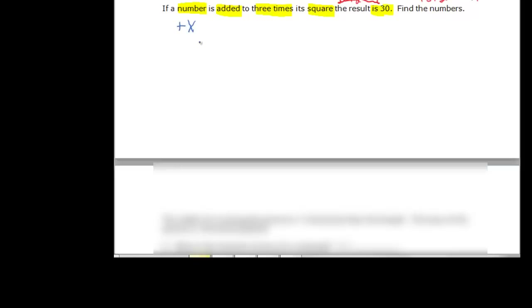A number would be x, is added to something in front of that — three times its square — so three times x squared, and then the result is thirty. It's not equal to zero, so we need to subtract thirty from both sides. So three x squared plus x minus thirty would be equal to zero.